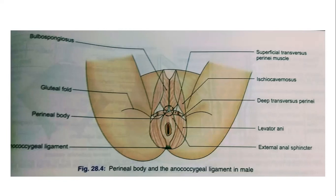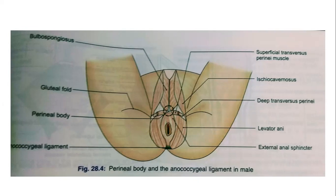A student asks about the course of the ureter through the abdomen and pelvis and how ureters are distinguished during surgery. The lecturer responds that the ureter is a simple muscular tube easily distinguished from arteries, veins, and nerves, as practice makes identification straightforward. The course can be followed and attachments identified, and the ureter can be traced from the kidney region to the pelvis.